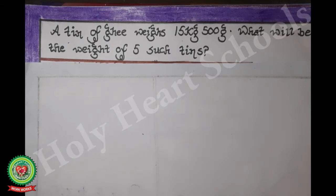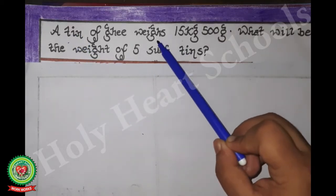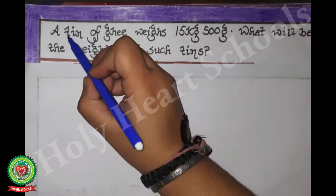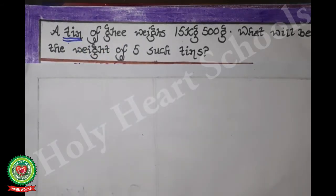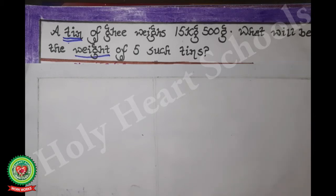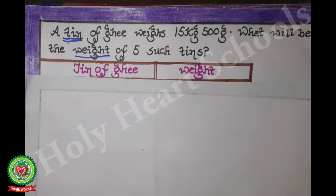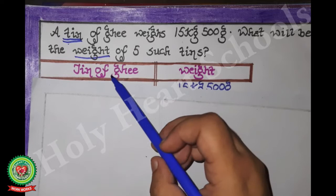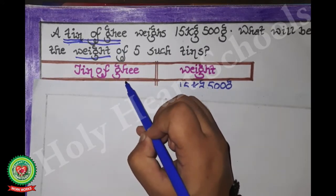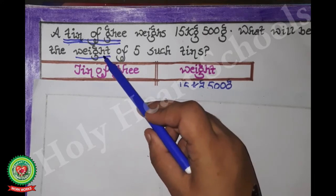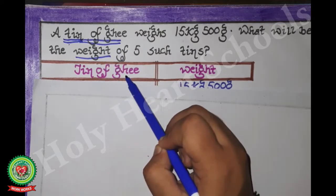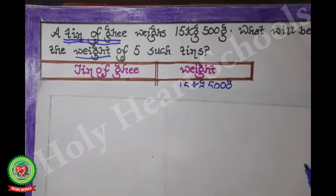The first is tin of ghee and the second is weight. Now which thing is given two times? Tin is given two times, so we will double underline tin. Weight is given single time, so we will underline weight single time. We will make one box with a partition line in between. The thing given two times goes on the left hand side and the thing given single time goes on the right hand side.